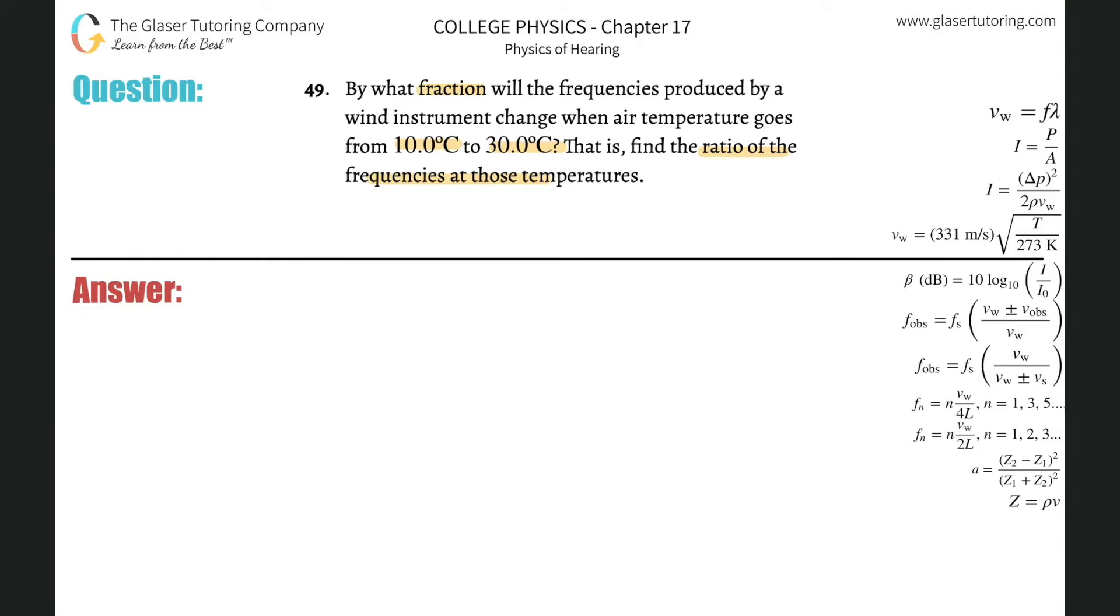Find the ratio of the frequencies. They want us to find the frequency under the hotter temperature divided by the frequency under the colder temperature. For the frequency under the hotter temperature, we can assume it's a tube open at one end, using the formula n times the speed of sound divided by 4L. If it's open at both ends, it's divided by 2L. It doesn't matter which we choose. So it's going to be the nth harmonic multiplied by the velocity of sound under the hot conditions, divided by 4 times the length of the tube, all divided by the nth harmonic multiplied by the velocity of sound under the cold temperature, divided by 4 times the length of the tube.